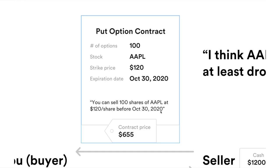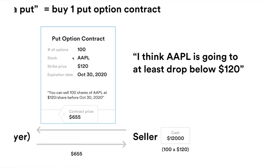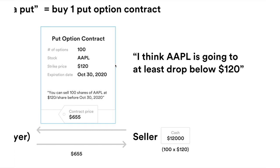First, you will need to buy 100 shares from the market. Then you use this put option contract to exercise it — to sell 100 shares. So if you buy a put, you buy this put option contract, you are basically betting Apple stock is going to drop below $120. Because if that happens — let's say it drops to $100 — then you can first buy 100 shares from the market at $100, and then use this put option contract to sell those 100 shares at $120, and profit the difference.